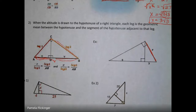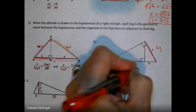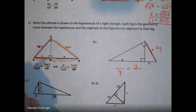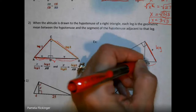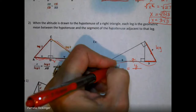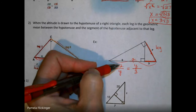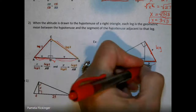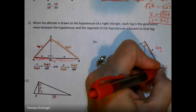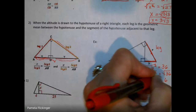In this first example, y is a leg, so that leg is the geometric mean between the whole hypotenuse — we add nine and three to get 12 — and just the segment adjacent to it, which is three. Cross-multiplying gives y squared equals 36. Taking the square root of both sides, y equals 6.